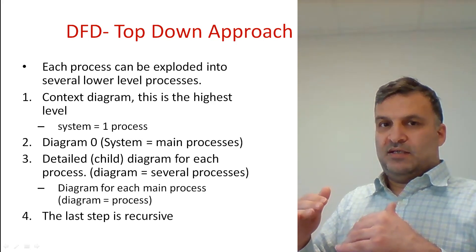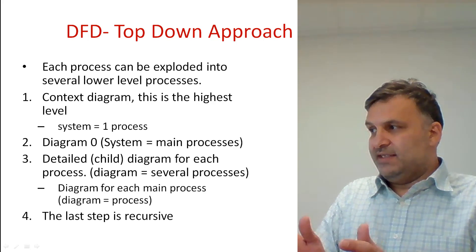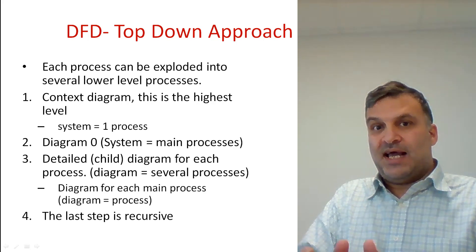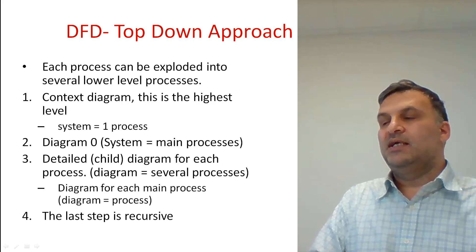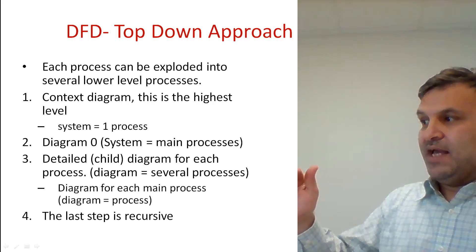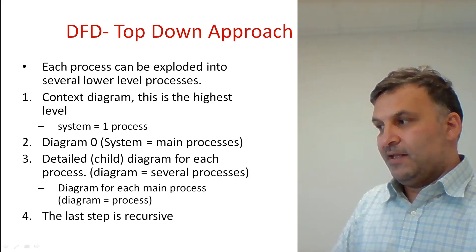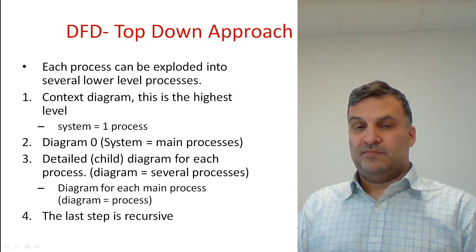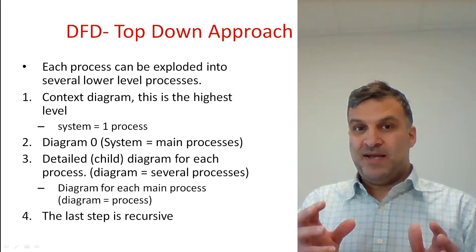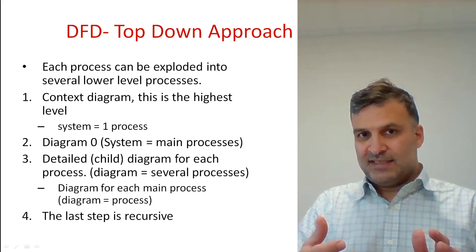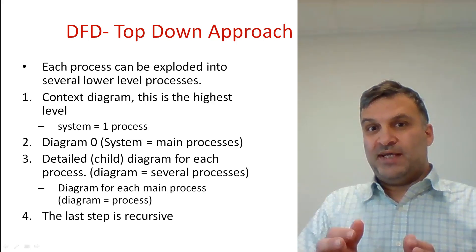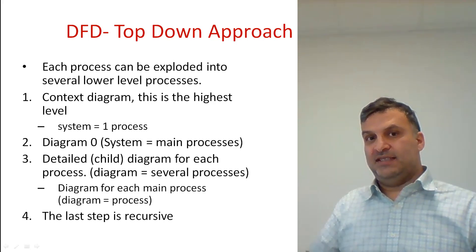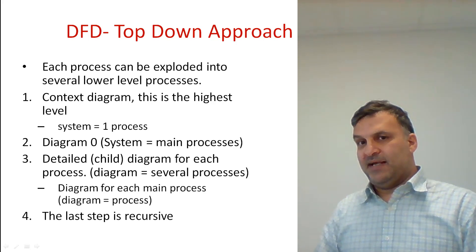In the level zero system, we can concentrate on the internal data exchange. At first we have the context level, then we have level zero. After that, when we know the main processes of the system, we can have a specific diagram for each process that details the functions, sub-functions, and sub-data stores used in that process. This step can be repeated recursively, so I can have a diagram for each sub-process, repeating as needed depending on the size of the system.